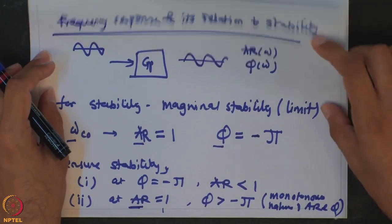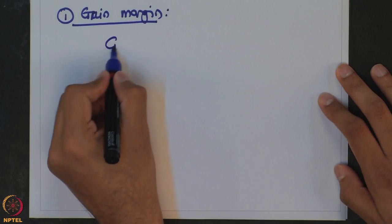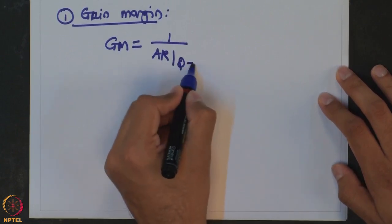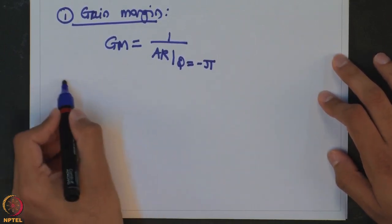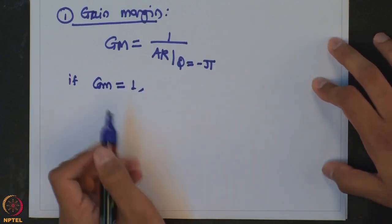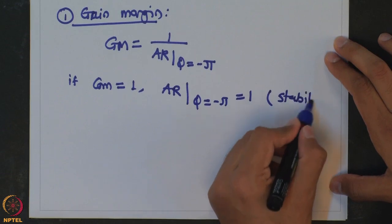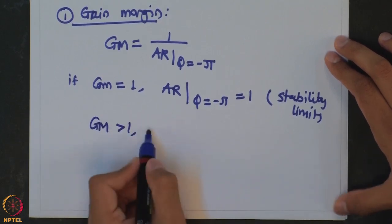These two conditions give rise to two design parameters in frequency response-based design. The first is known as gain margin. Gain margin is defined as the inverse of the amplitude ratio when the phase is equal to minus pi. If gain margin equals 1, then AR at phase equal to minus pi equals 1, meaning the system is at the stability limit. If the gain margin is greater than 1, you have closed loop stability.